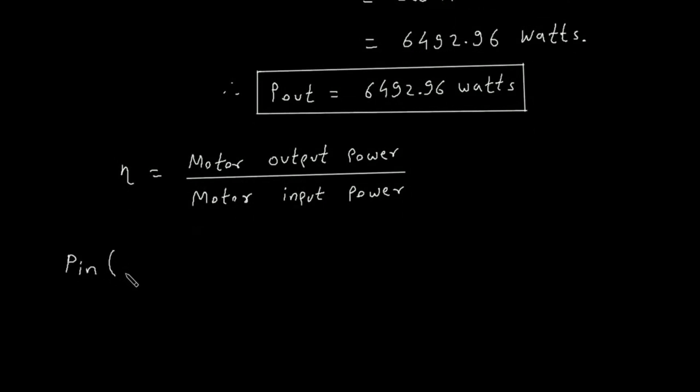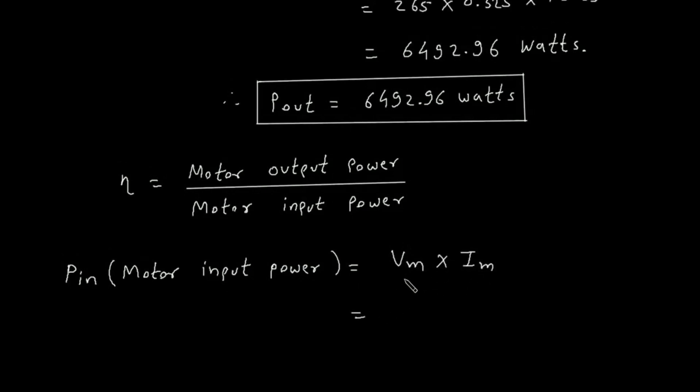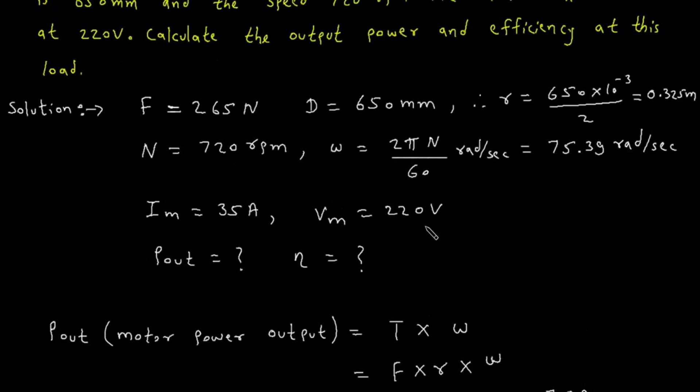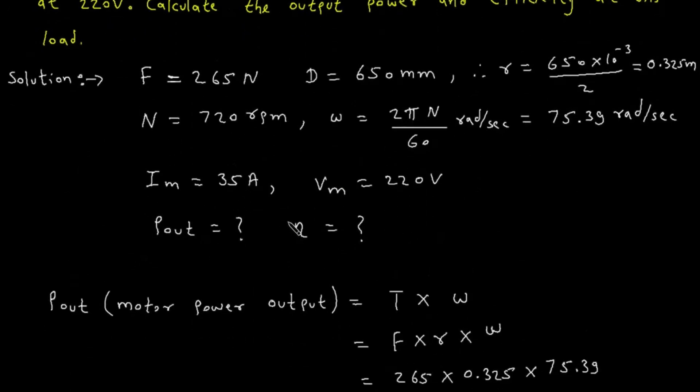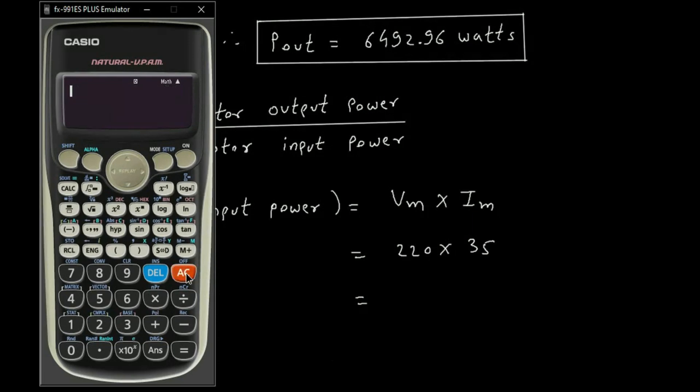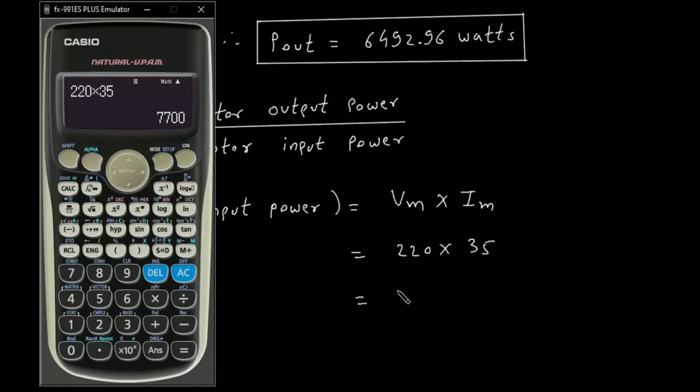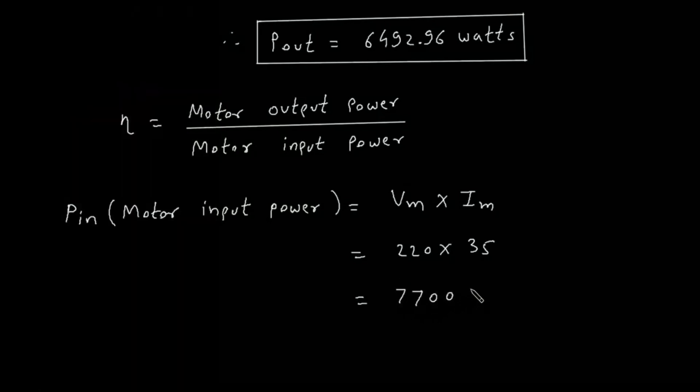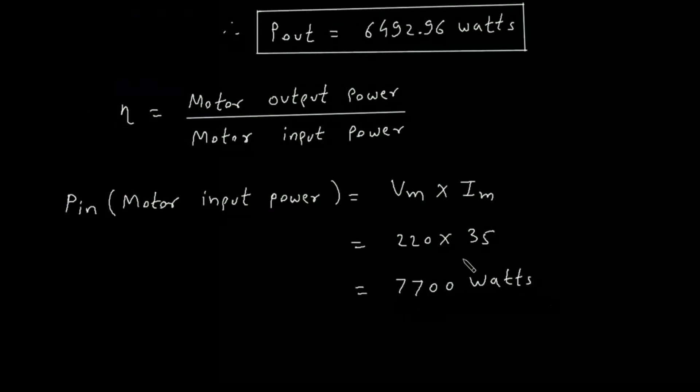The value of Vm is 220V and Im is 35A. 220 times 35 equals 7700 watts.